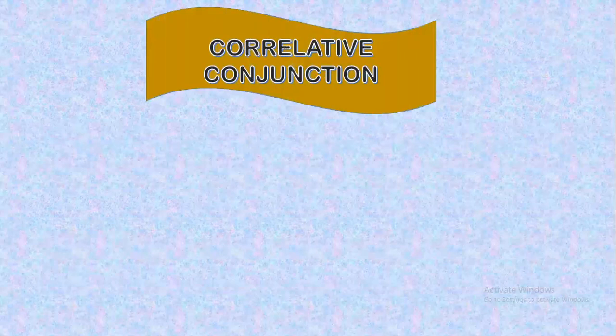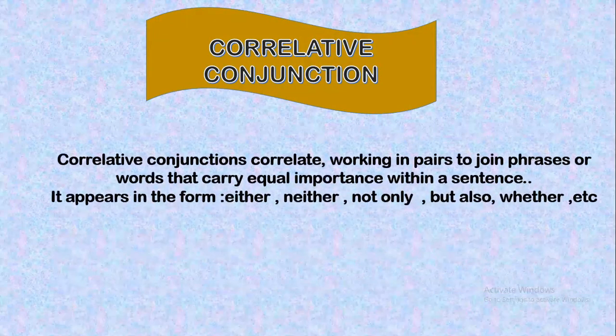Next is correlative conjunction. Correlative conjunctions work in pairs to join phrases or words that carry equal importance within a sentence. It appears in the form either, neither, not only, but also, whether, etc.